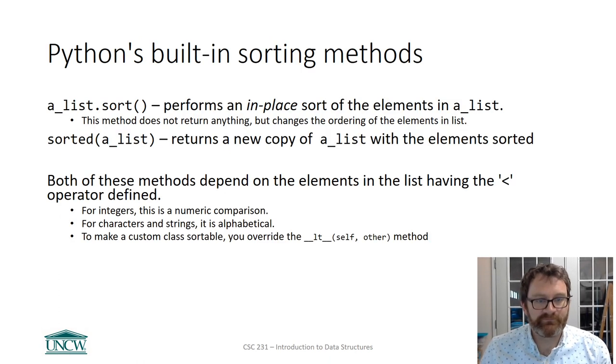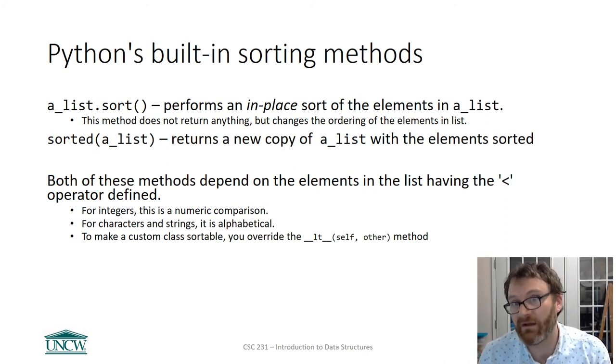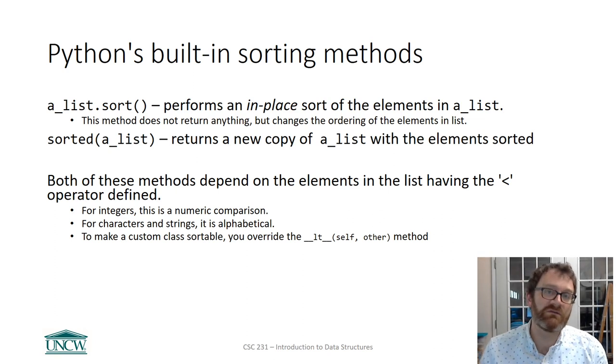So for integers, if you're sorting a list of integers, integers have a natural meaning for what less than means. For characters and strings, less than has to do with alphabetical order. But if you have a custom class, like, say, a bank account, and a bank account has a variable in it for a first name, last name, account number, and balance, it's up to you to define what one bank account less than another means.